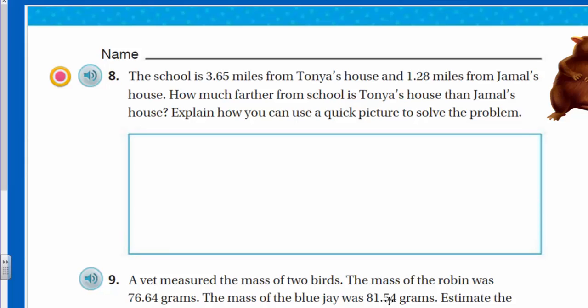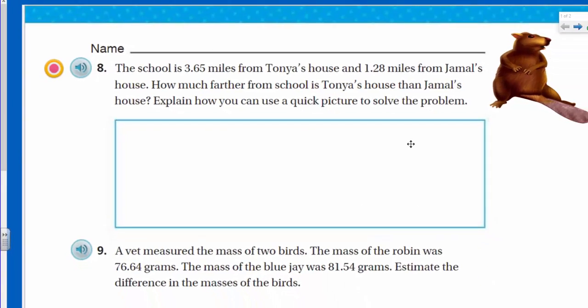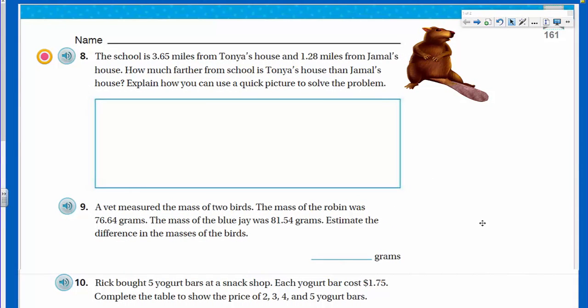We have the school here is 3.65 miles from Tanya's house and 1.28 miles from Jamal's house. How much farther from school is Tanya's house than Jamal's house? Explain how you can use a quick picture to solve the problem.